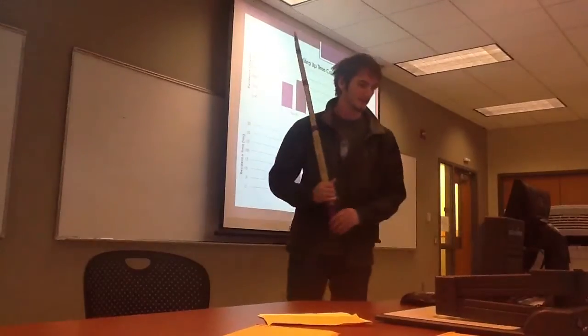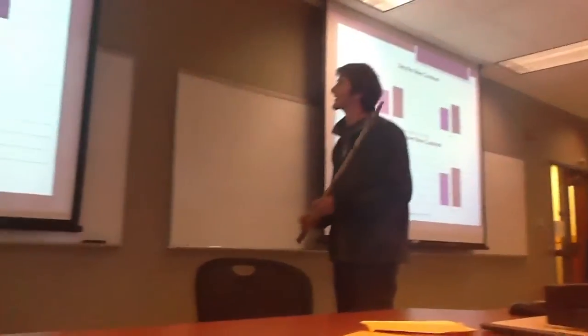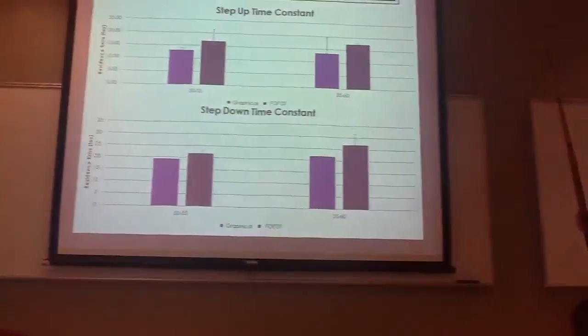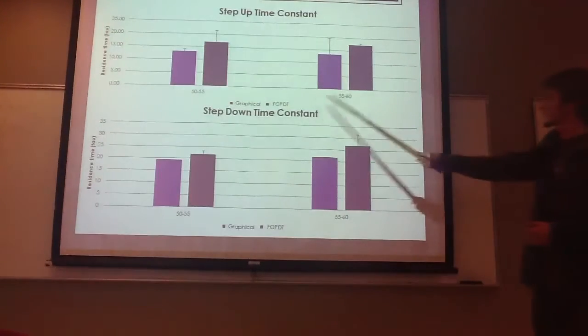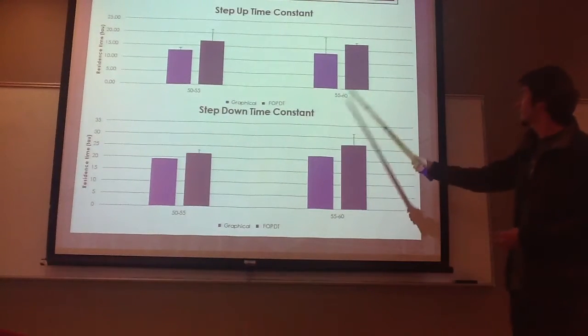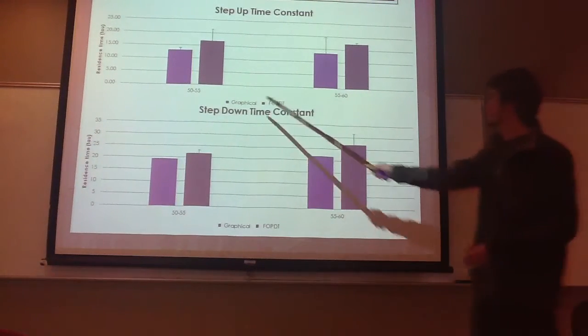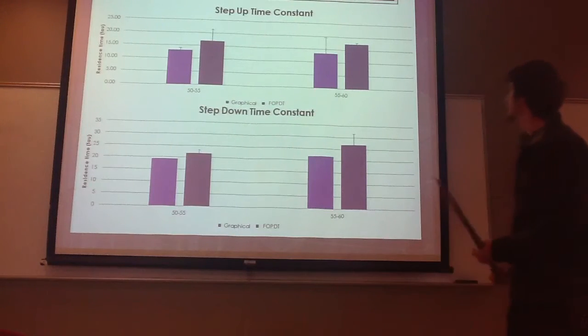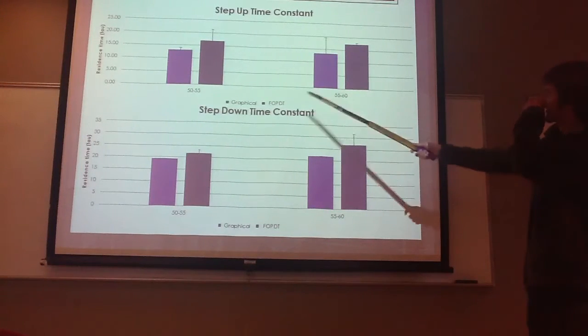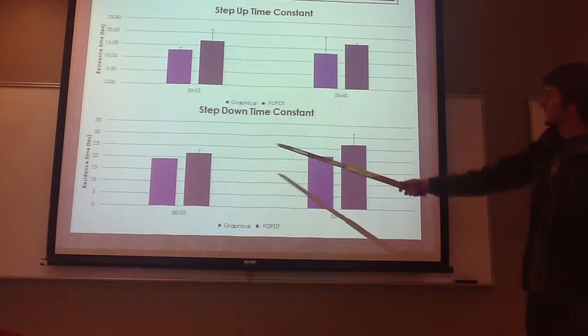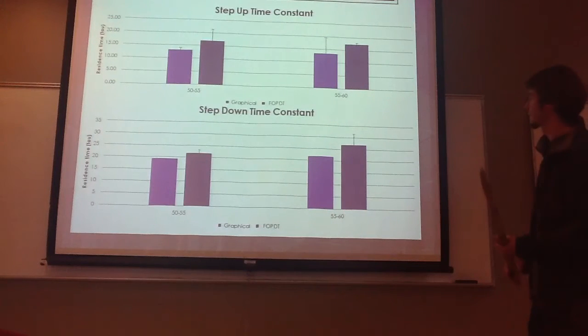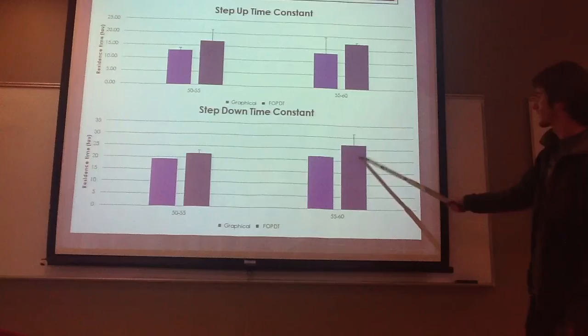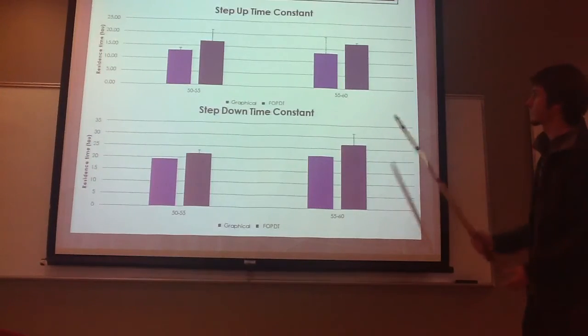So, here's a comparison between step up time constant and step down, and these are the different ranges right here, and the different colors are the two different FIT methods, so this is the FIT2 method, and this is the FOPDT. As you can see, the step up they're relatively close, and the same thing for the step down. In both cases, the FOPDT was actually higher.